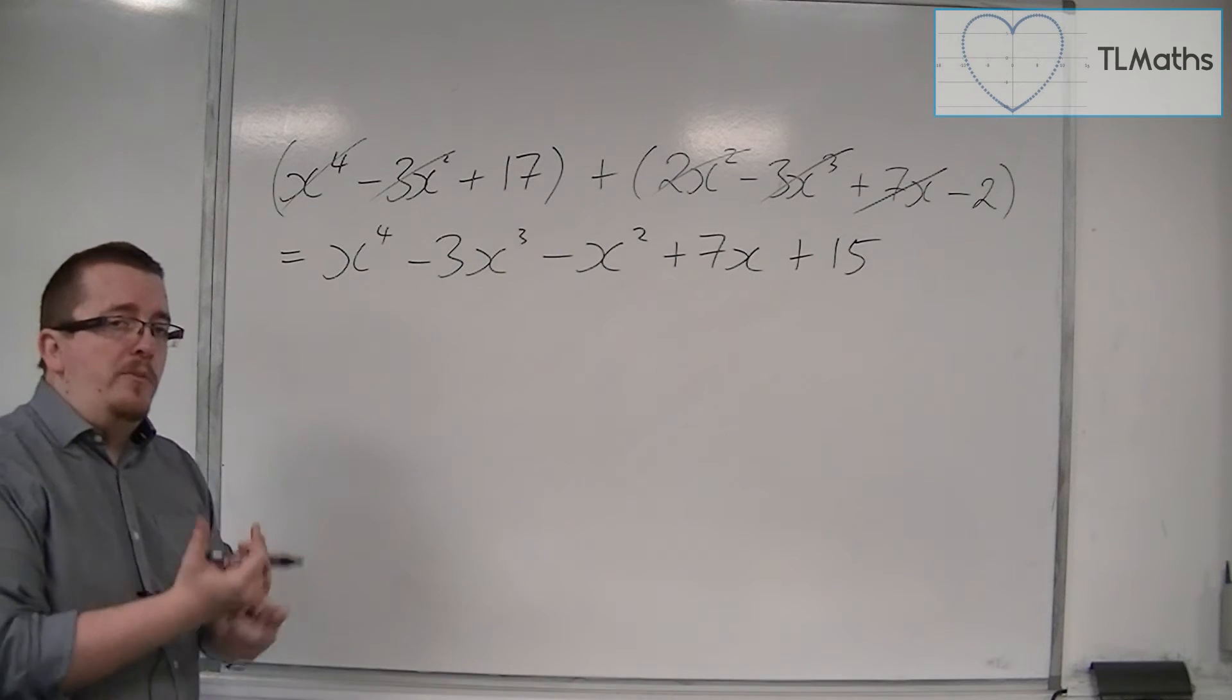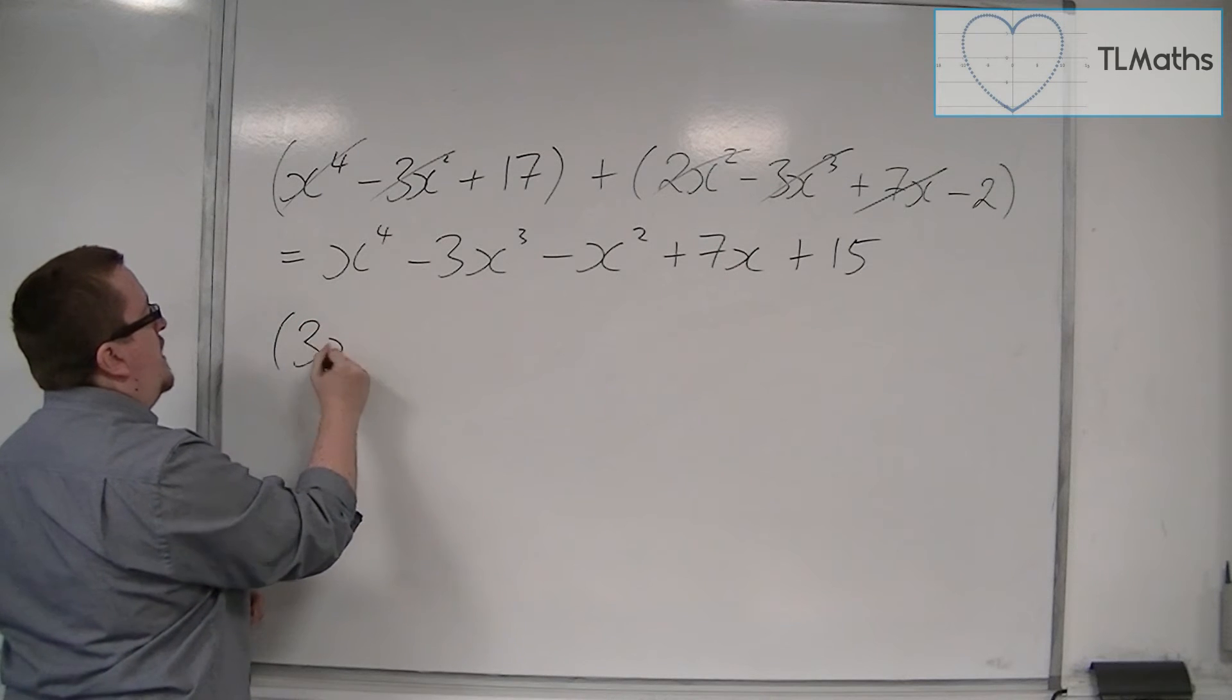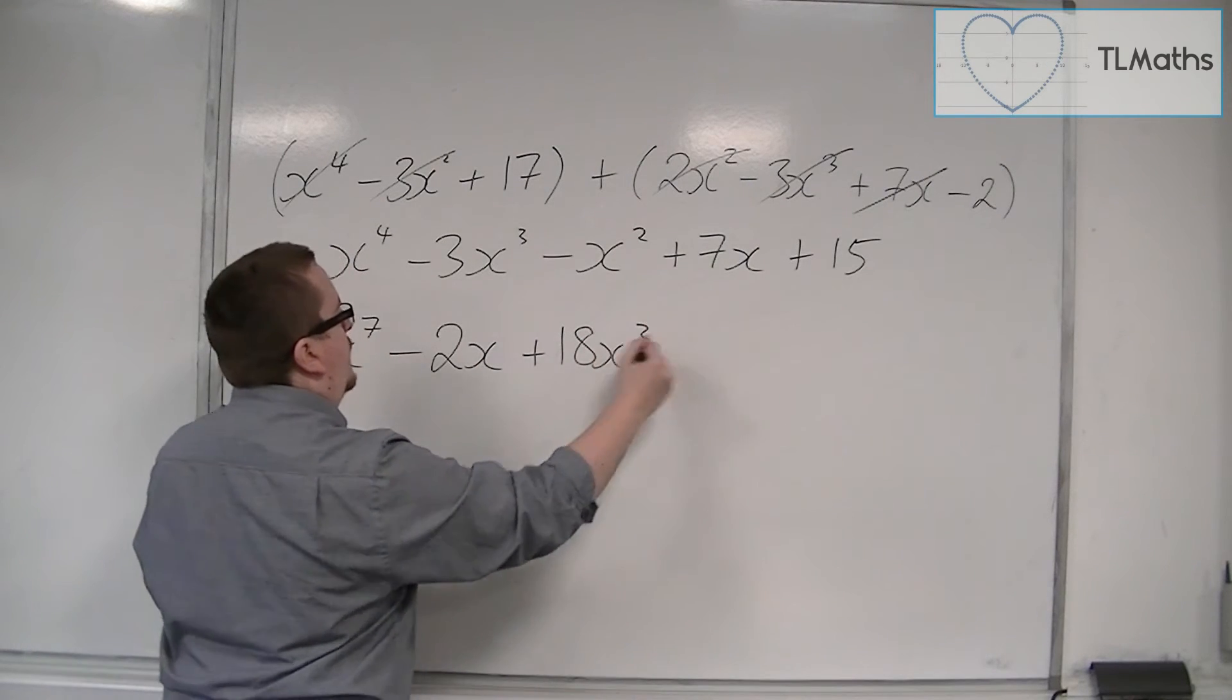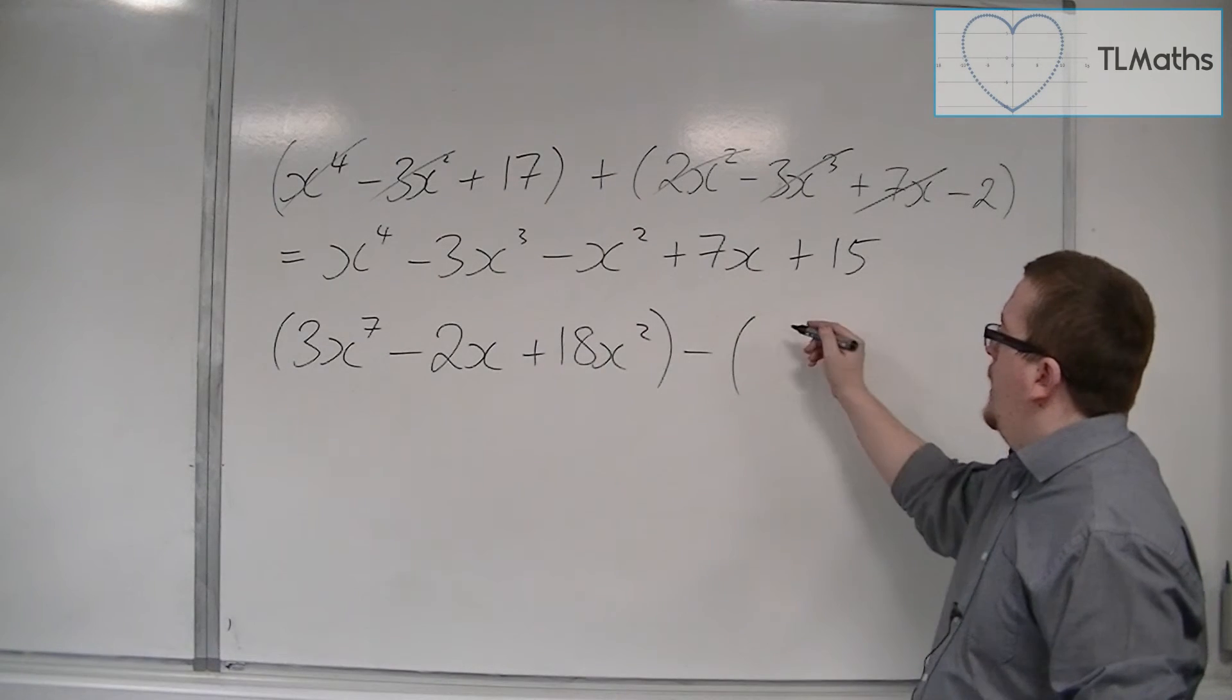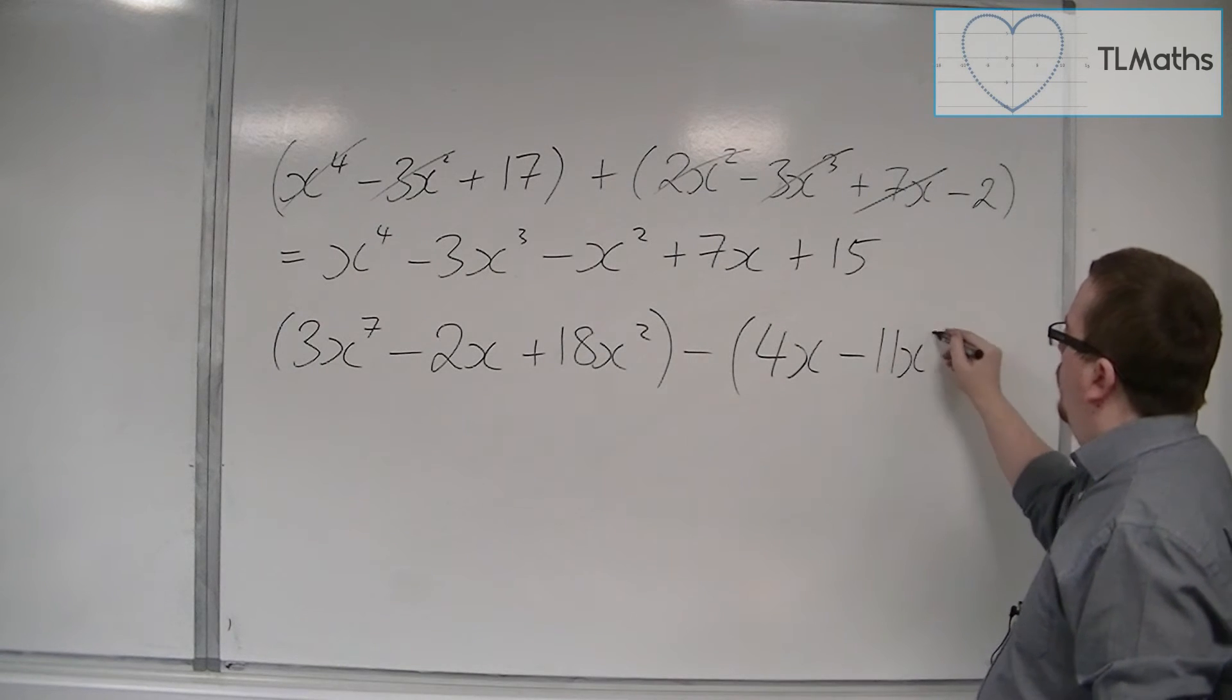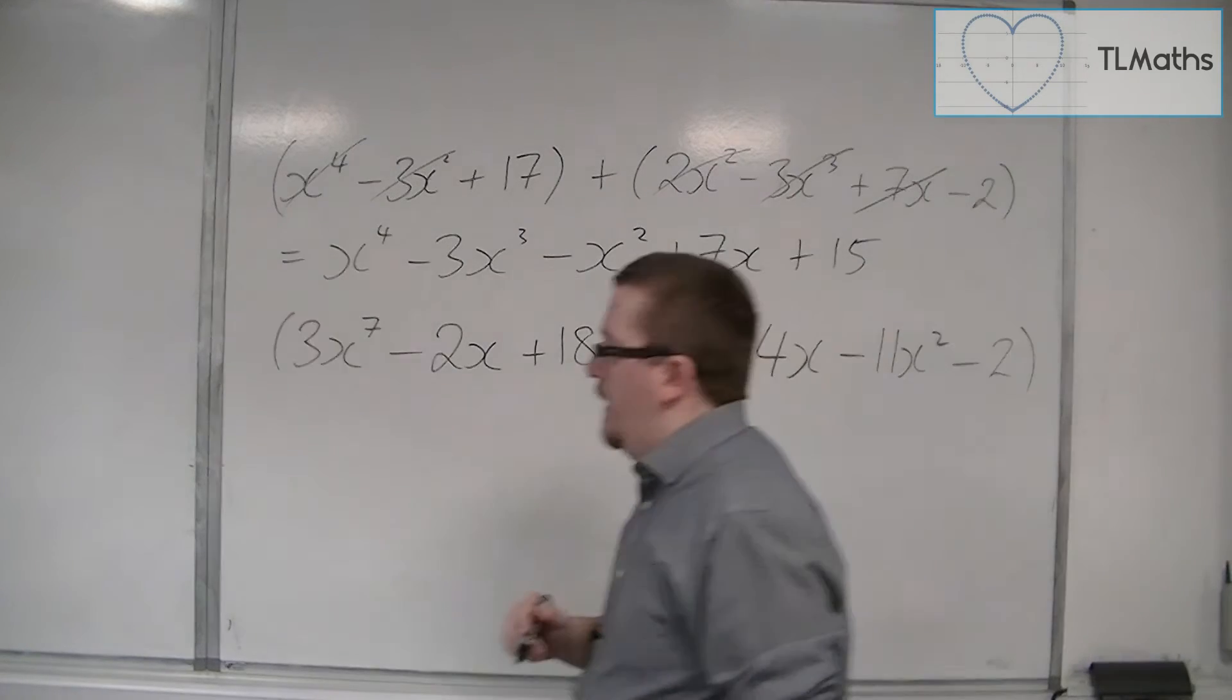Let's come up with another one, this time subtraction. Let's do something like 3x to the 7, take away 2x plus 18x squared. And we're going to take away 4x minus 11x squared minus 2. Okay, something like that.